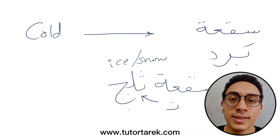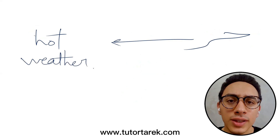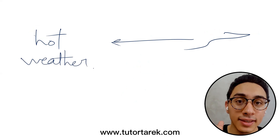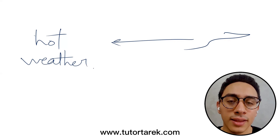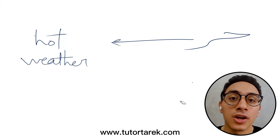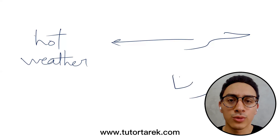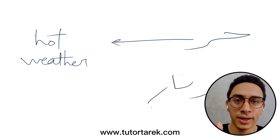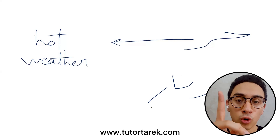The opposite of Sa-a is 'Har' — hot. You can say 'El-Gaw Har il-Nahar-Da.' Or, for example, in the Gulf countries area, you can say 'El-Gaw Har Geddan' — it's extremely hot there. To make it even more extreme, you say 'Har Nar.' Nar means fire or hell, so it's really, really hot. So we've learned cold: Sa-a and Berd; and hot: Har and Har-Nar.